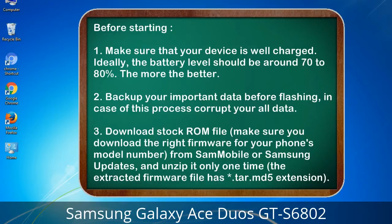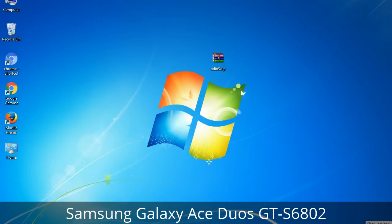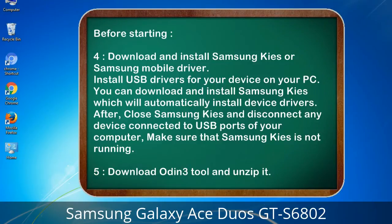3. Download the stock ROM file. Make sure you download the right firmware for your phone's model number from Sammobile or Samsung updates, and unzip it only one time. The extracted firmware file has a *.tar.md5 extension. 4. Download and install Samsung KIES or Samsung mobile driver to install USB drivers on your PC. After, close Samsung KIES and disconnect any device connected to USB ports — make sure Samsung KIES is not running. 5. Download Odin 3 tool and unzip it.